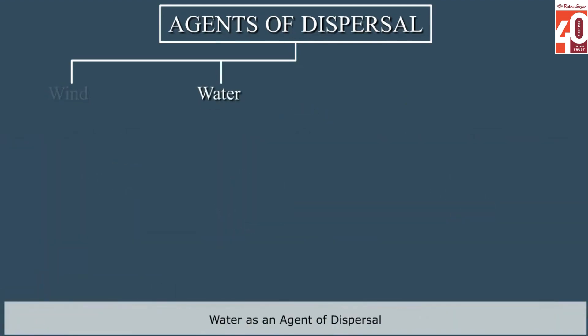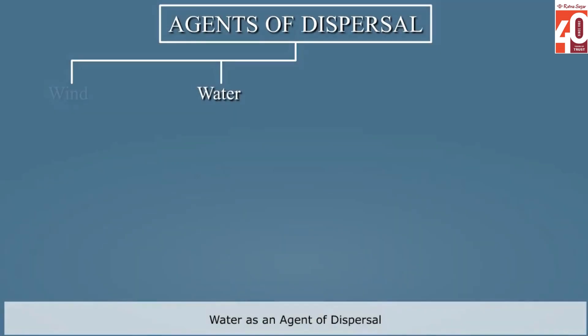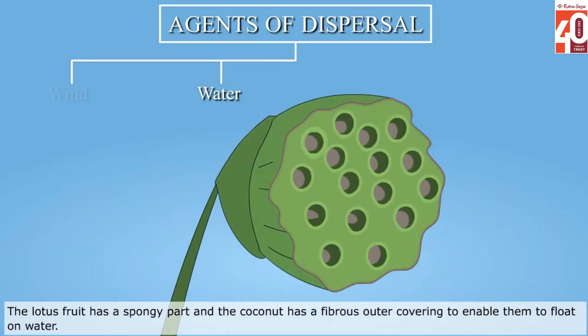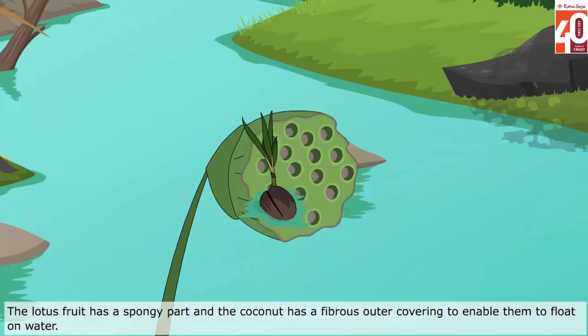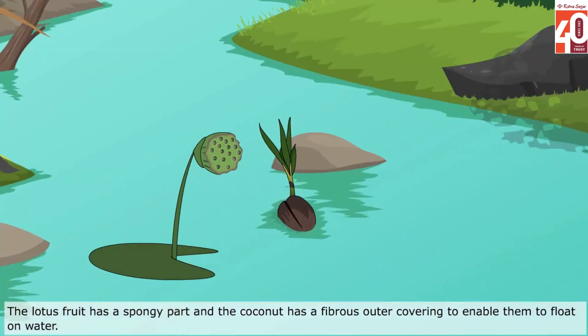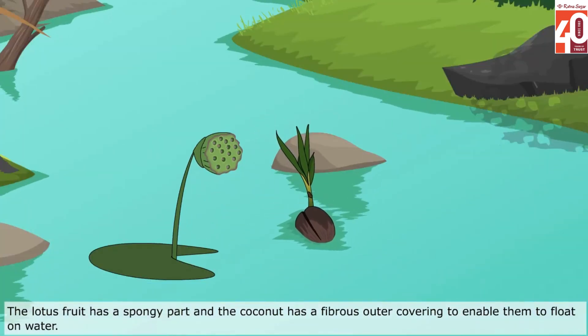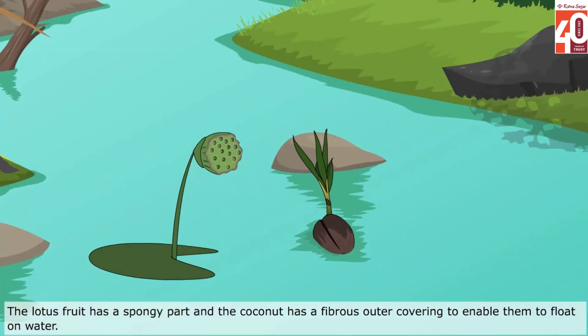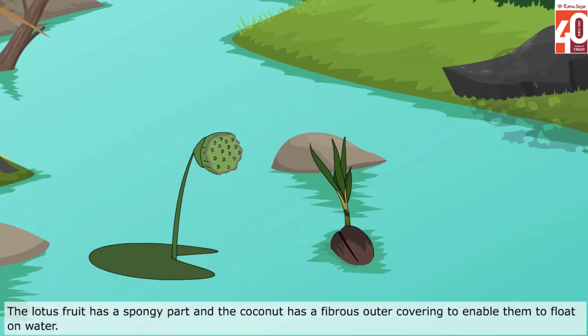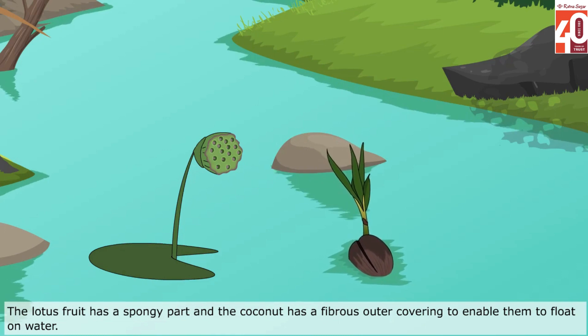Water as an agent of dispersal: The lotus fruit has a spongy part and the coconut has a fibrous outer covering to enable them to float on water.